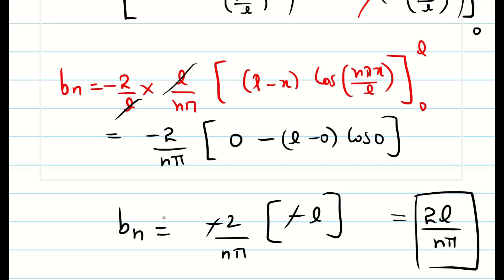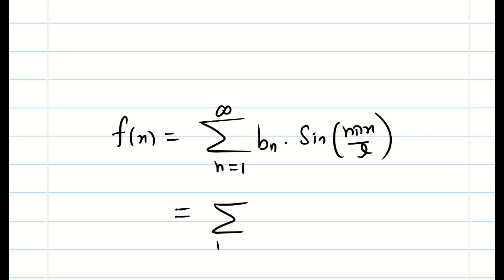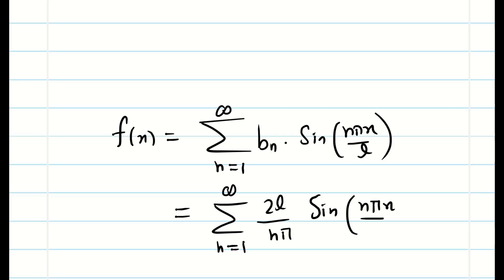Now substitute bₙ in the original formula. f(x) = summation n=1 to infinity of bₙ sin(nπx/l). Therefore my answer is: summation n=1 to infinity of (2l/nπ) sin(nπx/l).